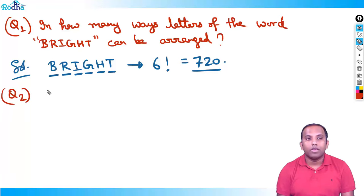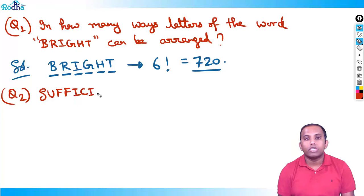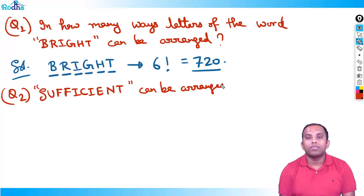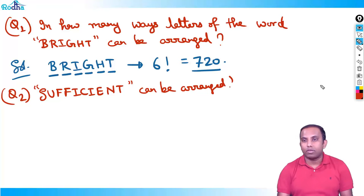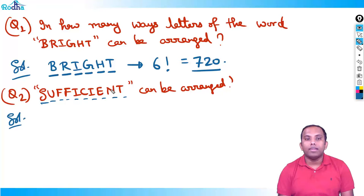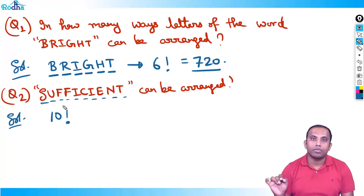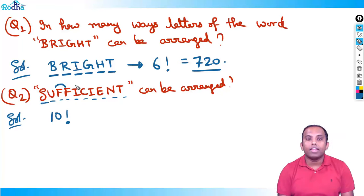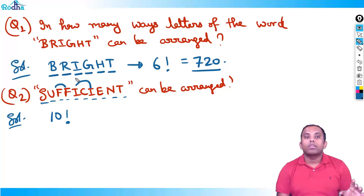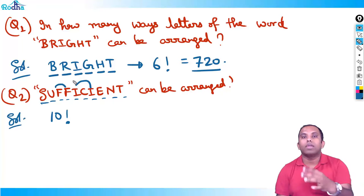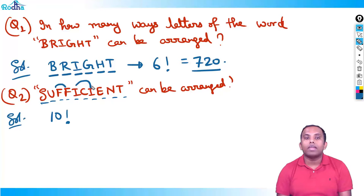Second question: In how many ways can the letters of the word SUFFICIENT be arranged? SUFFICIENT has 10 letters. However, we cannot directly write 10! because not all letters are different — F repeats twice and I repeats twice. The formula for n different things only applies when all are different.